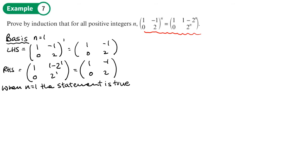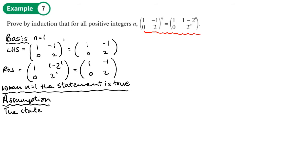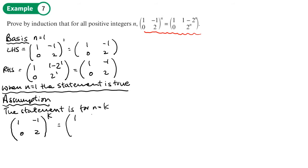We're now ready to move on to the second step, which is the assumption step. We're assuming the statement is true for n equals k. So we assume [1, -1; 0, 2] to the power of k is equal to [1, 1 minus 2 to the k; 0, 2 to the k].